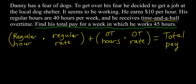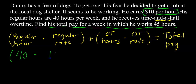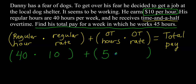What are the regular hours worked? Well, it's 40 — anything up to 40 is regular hours. So I'll replace the regular hours with 40 and multiply that by the regular rate of $10 per hour. That gives us 40 times 10. Now for overtime hours: he worked a total of 45 hours, and anything over 40 is overtime, so he worked 5 hours overtime. I took 45 minus 40, which gives me 5.